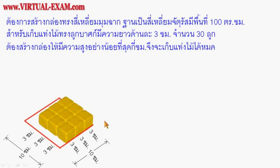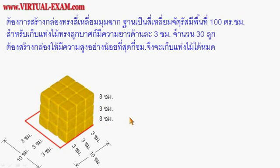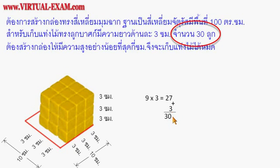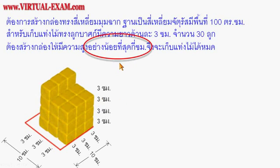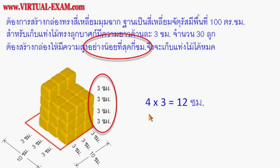ในแต่ละชั้น สามารถวางแท่งไม้ได้ 3 × 3 = 9 ลูก ใน 3 ชั้น จะได้ 27 ลูก แต่ต้องเก็บทั้งหมด 30 ลูก ดังนั้นต้องเพิ่มอีก 1 ชั้น รวมเป็น 4 ชั้น ความสูงที่ต้องการ = 4 × 3 = 12 เซนติเมตร (Each layer fits 3 × 3 = 9 blocks. Three layers hold 27 blocks, but we need 30. So a 4th layer is required. Minimum height = 4 × 3 = 12 cm.)